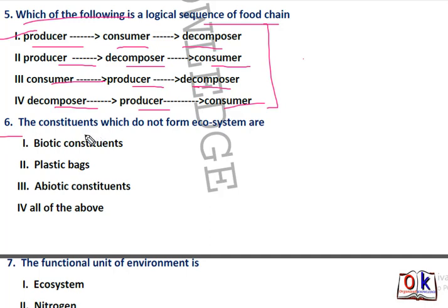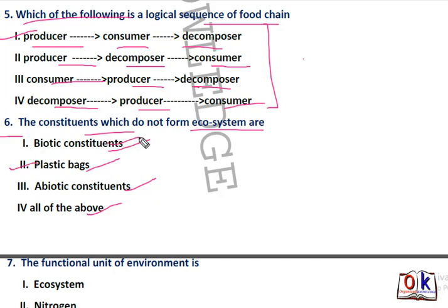Question number 6: which constituents do not form part of the ecosystem? Options are biotic constituents, plastic bags, abiotic constituents, or all of the above. Plastic bags will be the right answer, because biotic components and abiotic components are both part of the ecosystem.